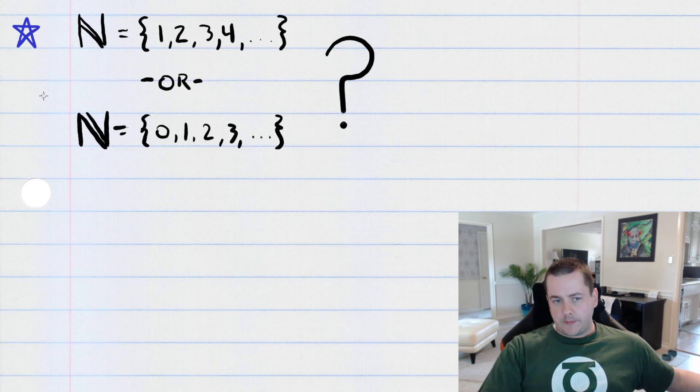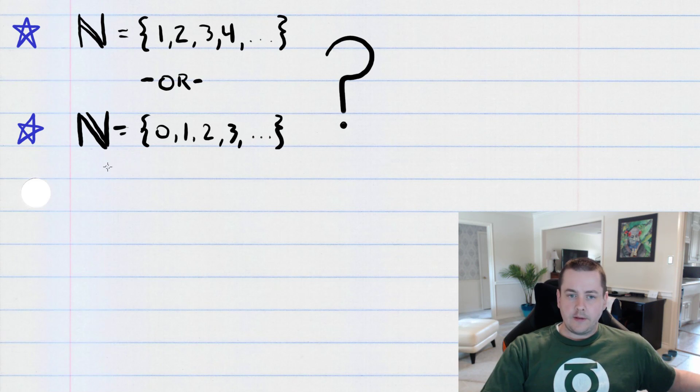However, if you learned your mathematics outside of the United States, or if you've had some exposure to graduate level math, you may prefer the second definition. And if I ask, is zero a natural number? You say, sure, the natural numbers is the set containing zero, one, two, three, four, five, and so on.